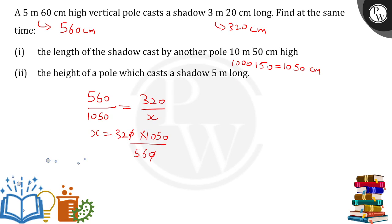x over here, after doing the calculation, will come out to be 600. That simply means 600 centimeter. I can say 6 meter ultimately - the length of the shadow cast will be simply 6 meter.